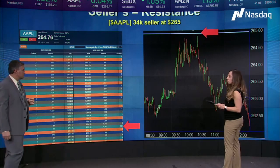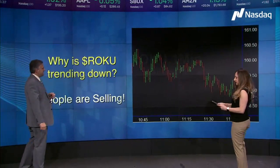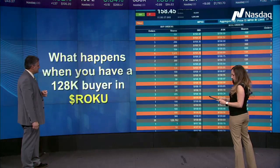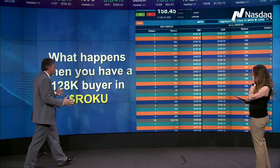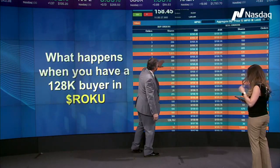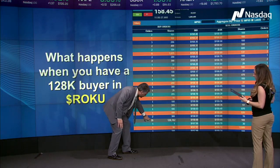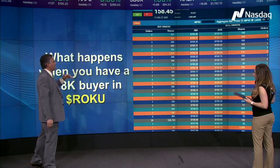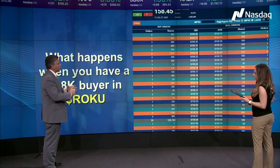Moving along to Roku — why is Roku trending down? Obviously people are selling. So if we take the next arrow, we'll see exactly where that level is. What happens when you have a 120,000-share buyer in Roku? You're looking at it and say, these are 200 shares, 300 shares — but when you work all the way down there and do the math, there are 35 different orders that make up 128,000 shares. So in theory, what would you call that? That's called demand. What does that make? A support on a chart that usually helps to trend it back up.